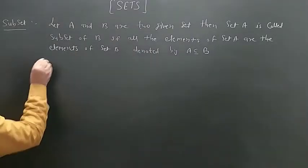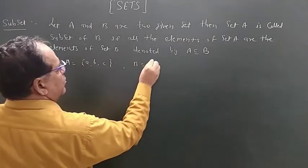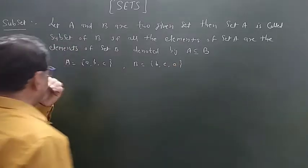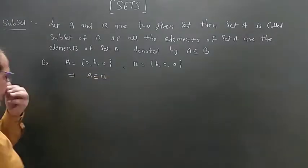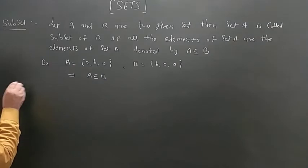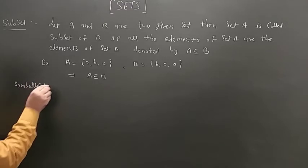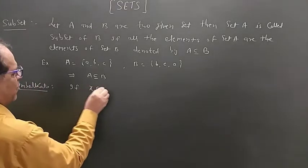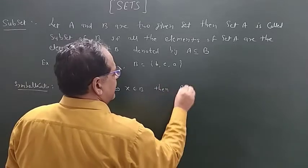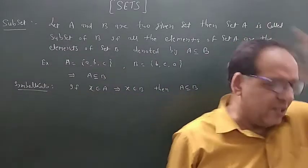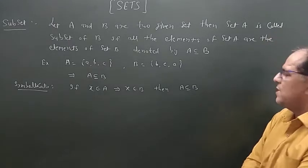For example, A = {A, B, C} and B = {B, C, A}. Here, all the elements of set A are elements of set B. So this implies that A is the subset of B. Theoretically, if X belongs to A implies that X belongs to B, then A will be a subset of B. So if X ∈ A implies X ∈ B, then we can say A is the subset of B.